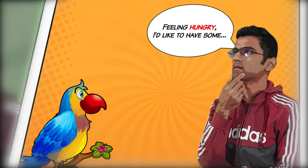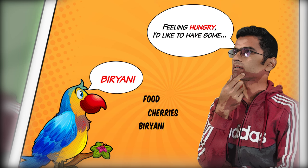Now when he hears 'feeling hungry, I would like to have some biryani,' the probability of him saying biryani, cherries, or food is much higher than words such as bicycle or book. Buddy doesn't understand the meaning of biryani or food or cherries the way humans do. All he is doing is using statistical probability along with some randomness to predict the next word or set of words, purely based on the past conversations he has listened to.